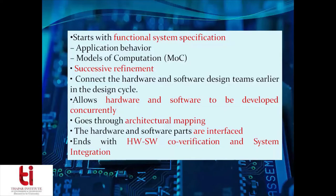Models of computation are used to represent the functionality, and application behavior is represented using these models of computation. The architectural specification is also present in this co-design approach. Successive refinement is applied in these models, then the hardware and software design teams are connected so they interact earlier in the system. Development of hardware and software takes place concurrently, and there is architectural mapping using models of architecture, with interfacing at each level.